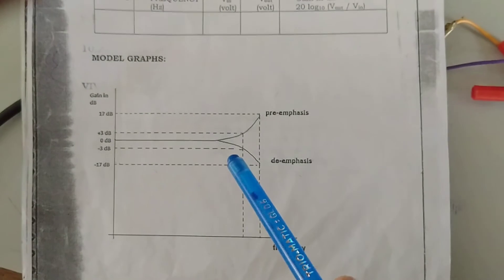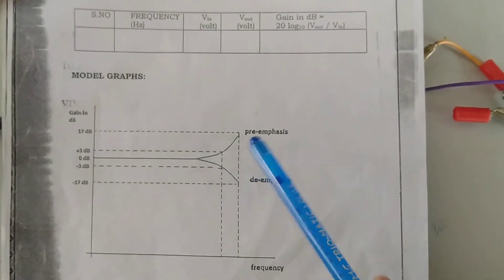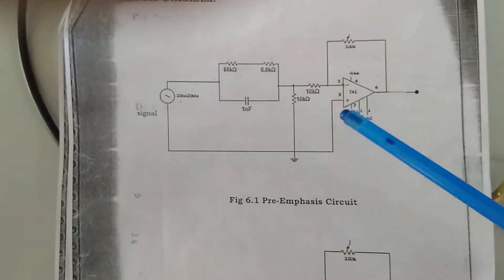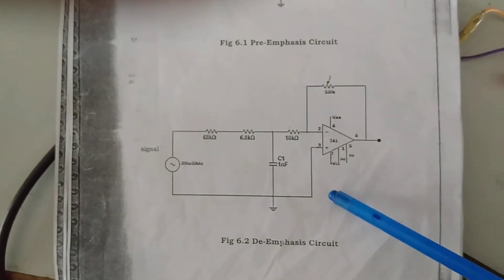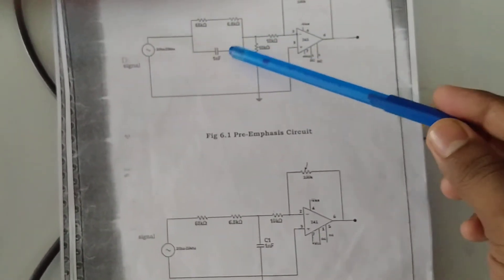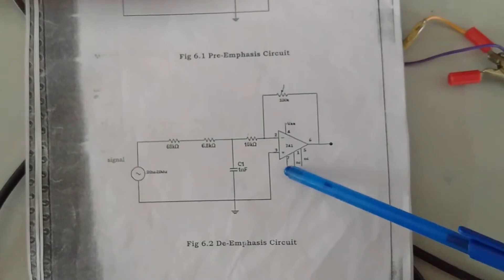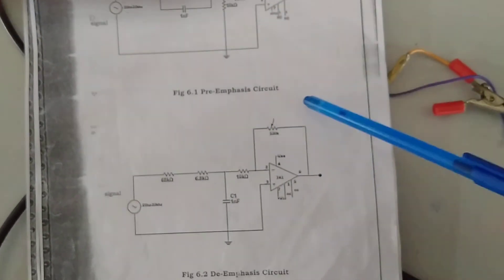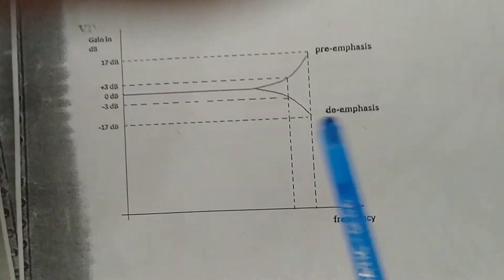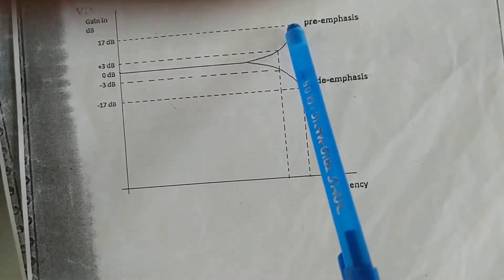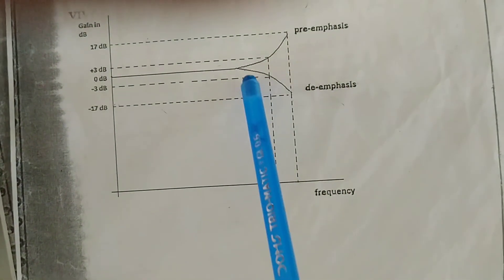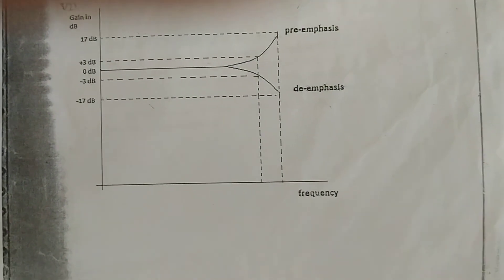De-emphasis is simply the reverse process. Whatever artificial boosting was done in the pre-emphasis circuit, the reverse is done in the de-emphasis circuit. From the connections point of view, the pre-emphasis used a high-pass type network; here we use a low-pass filter type network, and the remaining components are the same. Plotting the response gives the de-emphasis curve, which is the reverse of the pre-emphasis response. Thank you.